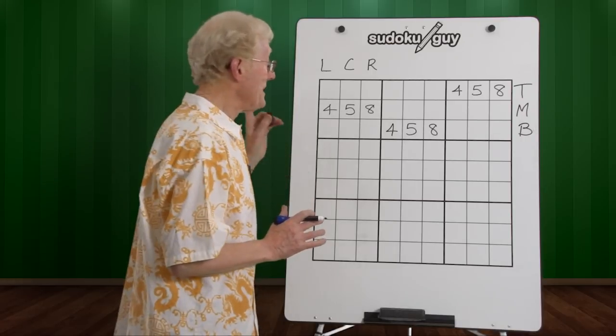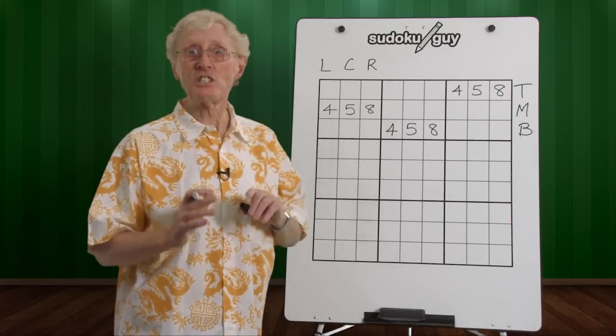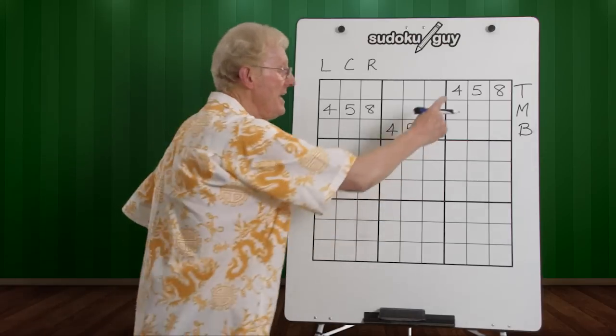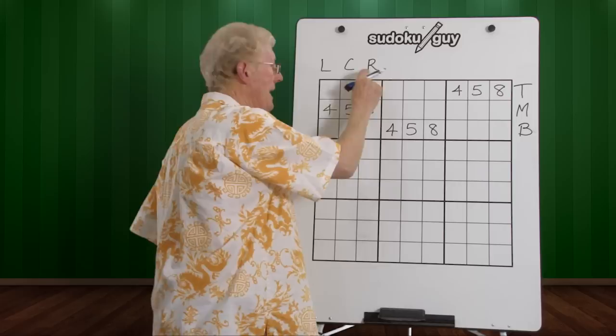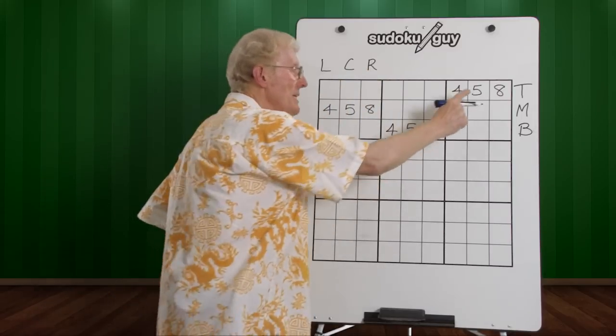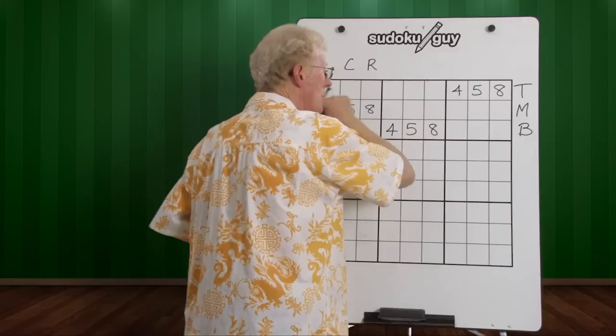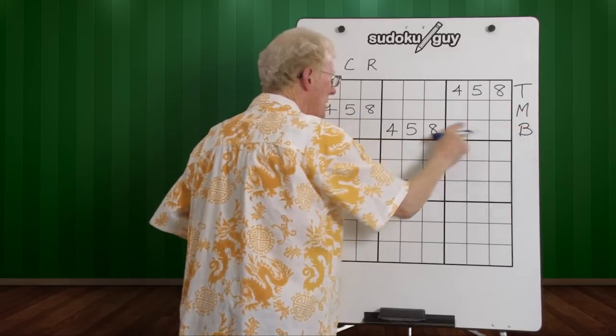This particular lesson is to show you an advanced level of the TMB or the LCR. Let me revise. TMB refers to the horizontal blocks. We have a top row, a middle row, and a bottom row.